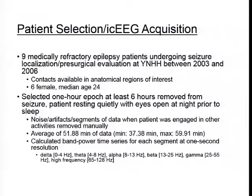In terms of patient selection, we studied nine medically refractory epilepsy patients who underwent seizure localization and pre-surgical evaluation at Yale New Haven Hospital between 2003 and 2006. The main selection criteria was that they had to have contacts available in the anatomical regions of interest, specifically default mode network locations. Of these nine patients, six were female with a median age of 24. For each patient we selected a one-hour epoch at least six hours removed from seizure, when the patient appeared to be resting quietly with eyes open at night prior to sleep.